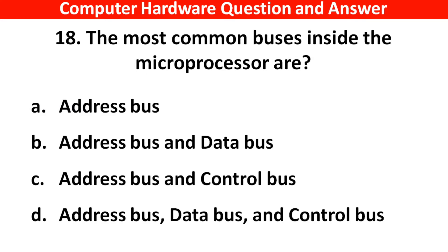The most common buses inside the microprocessor are — the right answer is Option D: Address bus, data bus, and control bus.